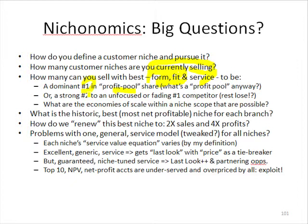We want to be a dominant number one because we have economies of scale within that niche scope. If we can't be number one, we can be a strong number two to an unfocused, fading number one — one that's trying to be too many things to too many people, whose management may be harvesting the business. If we can't be dominant number one or a strong number two to a fading number one, we're simply not going to make enough money.